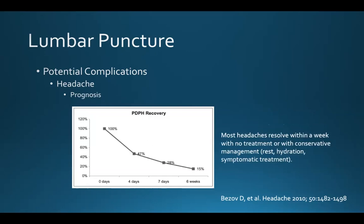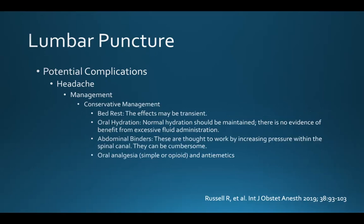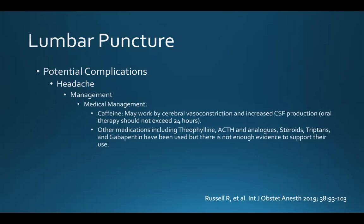Most of these headaches resolve within a week with no treatment or with conservative management such as rest, hydration, and symptomatic treatment. Risks of not treating include chronic headache or back pain, cranial subdural hematoma from downward traction of the brain rupturing subdural bridging veins, cerebral venous sinus thrombosis, and chronic cranial nerve palsies. Conservative management includes bed rest, oral hydration, abdominal binders, oral analgesia including opioids, and anti-emetics. Caffeine may work by cerebral vasoconstriction and increased CSF production, but oral therapy should not exceed 24 hours. Other medications have been used, but there's not enough evidence to support their use.